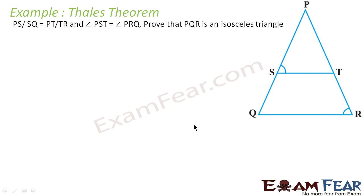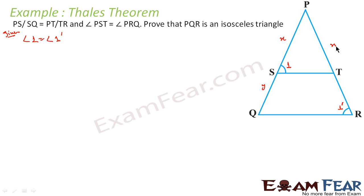Let us take one example of Thales theorem. It says PS by SQ is equal to PT by TR. Since PS by SQ is equal to PT by TR, and angle PST is equal to angle PRQ — let this be angle 1 and angle 1 dash. Both are given equal, so angle 1 is equal to angle 1 dash. Also, let PS be X, SQ be Y, PT be X dash, and TR be Y dash. So X by Y is equal to X dash by Y dash — this is also given.